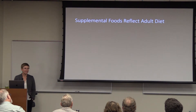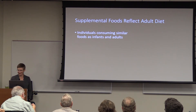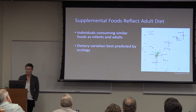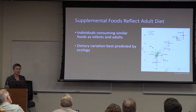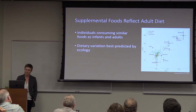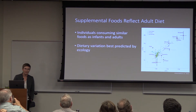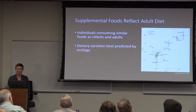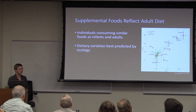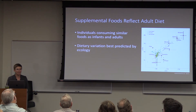What are kids being fed as supplemental foods? Basically what adults are eating, which isn't surprising. Dietary variation is best predicted by ecology: if you're living on the Bay Shore, you're eating shellfish and fish; if you're living inland, you're eating plant foods — acorns, seeds. There's not really baby food — there's adult food that's specifically processed for infants, pre-masticated or pulverized. In California, the way food is prepared isn't always any different for adults versus children. There's a lot of mush.